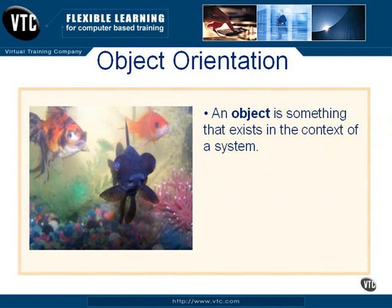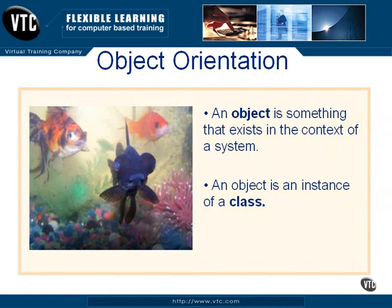An object is something that exists in the context of a system, and an object is an instance of a particular class. In our illustration here we have a system that's an aquarium, and within that aquarium we have a class called goldfish, and within that class of goldfish we have individual instances of particular fish. So those are our objects.